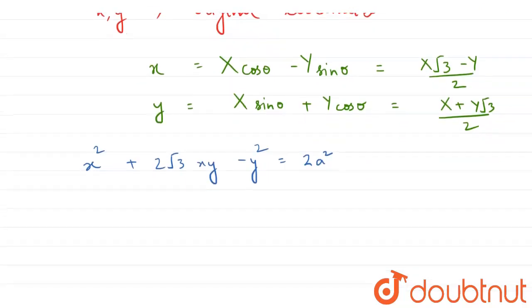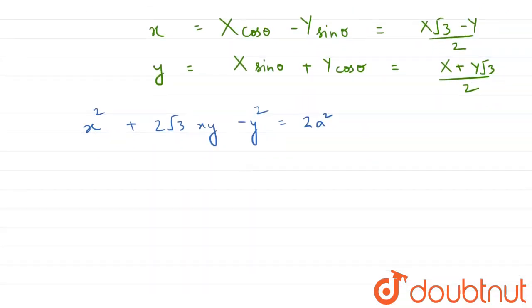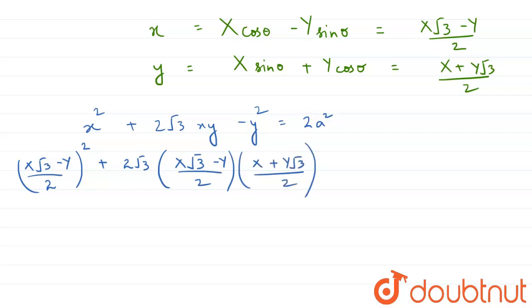So in place of x we will write down x root 3 minus y by 2 whole square, and then plus 2 root 3, so again x root 3 minus y by 2, and x plus y root 3 by 2, and again x plus y root 3 by 2 whole square.